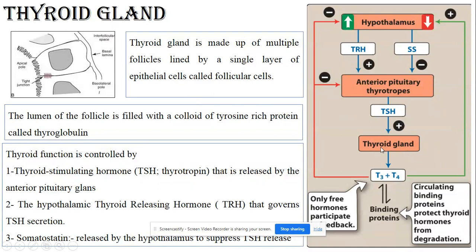T3 and T4 bind to circulating proteins with a very strong, avid binding. This binding protects the thyroid hormone from degradation. In the blood, the majority of thyroid hormones are bound to circulating proteins, while the free thyroid hormone fraction is responsible for the physiological function. This free hormone also exerts a negative feedback mechanism to regulate thyroid hormone levels.